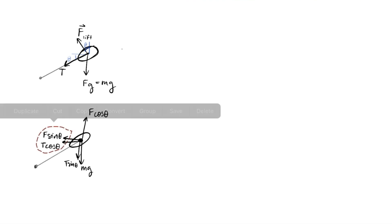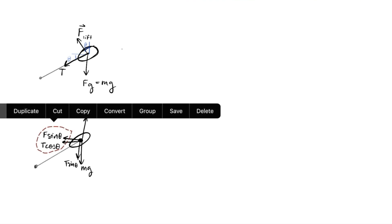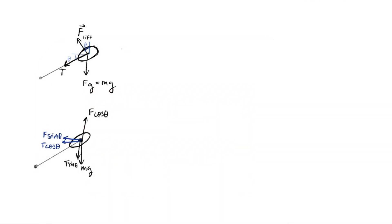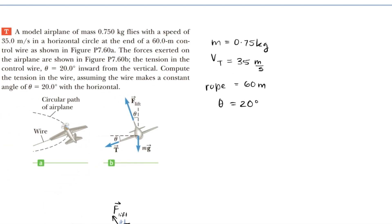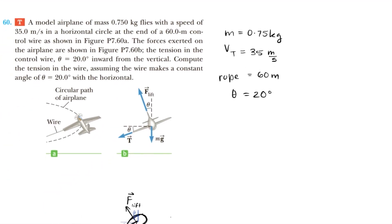Let's color our centripetal forces blue. This makes sense because the plane is revolving in this direction, with centripetal forces pointing towards the center of that orbit. Now, what do we need to find? We need to compute the tension in the wire, so T equals question mark.